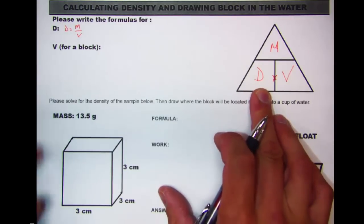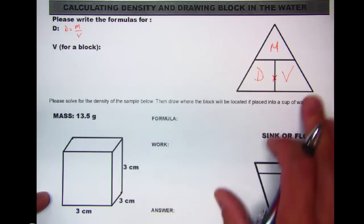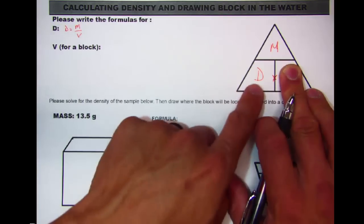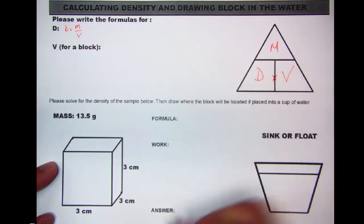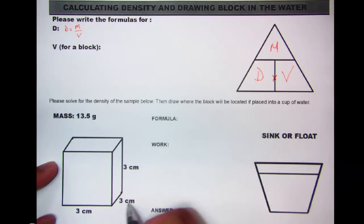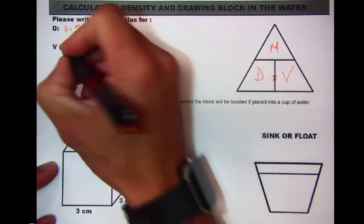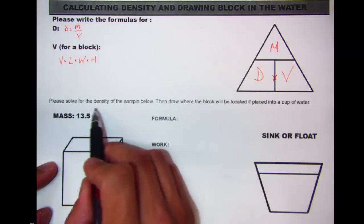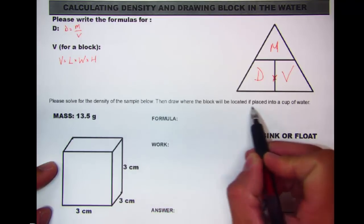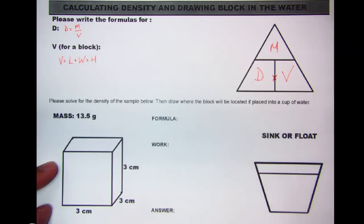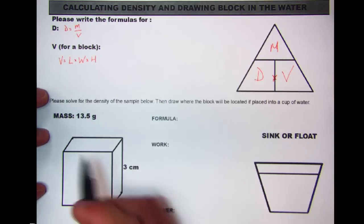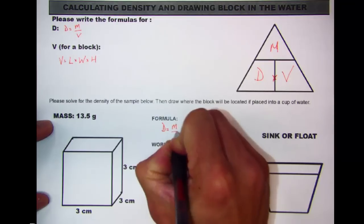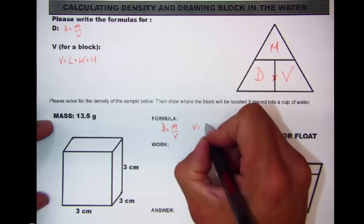We need to find the volume first since it's not directly given. Write down formulas: density equals mass over volume, and volume equals length times width times height. They give us a mass of 13.5 grams. We need volume, so: volume equals 3 centimeters times 3 centimeters times 3 centimeters.